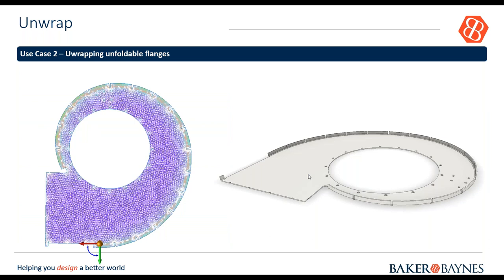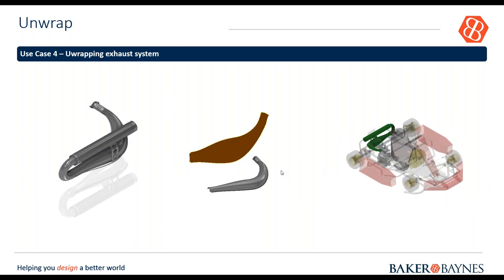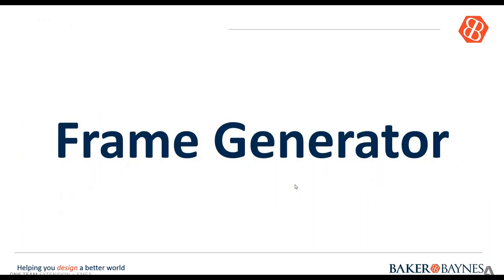The Unwrap tool can also be used for unfolding unfoldable flanges in Inventor sheet metal — sometimes certain flanges cannot be flat-patterned, and the Unwrap tool can flatten them out. Use cases include car seat covers, exhaust systems made from rolled sheet metal — you can unwrap these to see the shape they create.